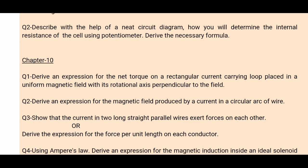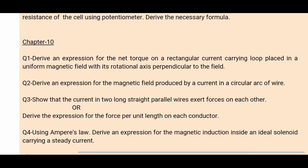Question number 3: show that currents in two long straight parallel wires exert forces on each other. This can also be asked as: derive an expression for the force per unit length acting on each conductor. The two questions have the same answer. If two parallel wires carry currents, the magnetic field lines from one wire exert force on the other and vice versa. The force per unit length formula is F/L = μ₀i1i2/(2πd), and both wires exert equal force per unit length.